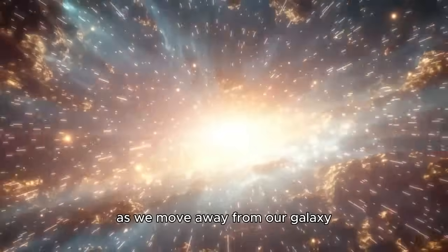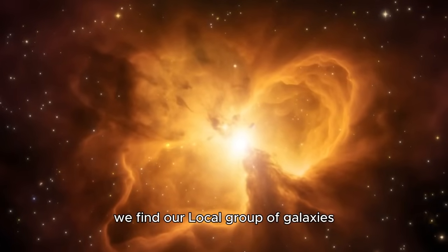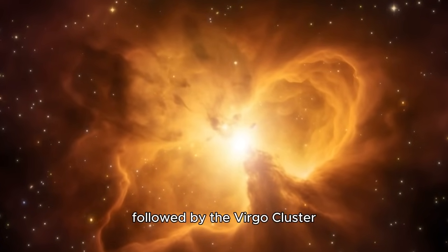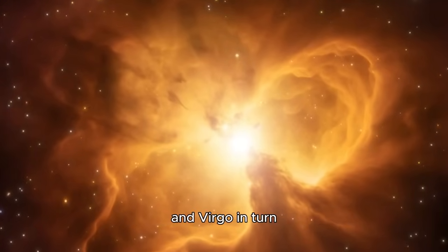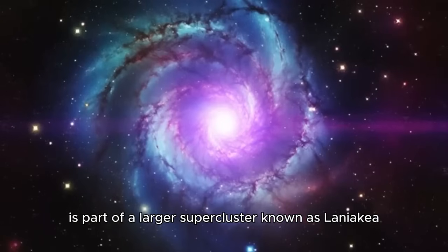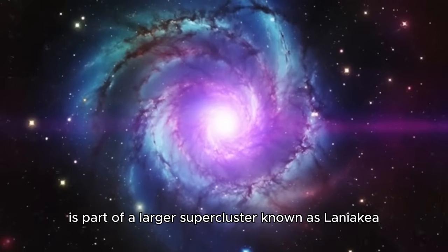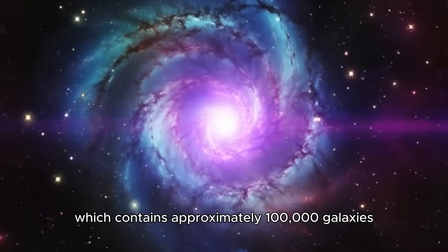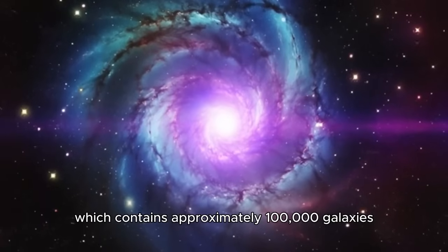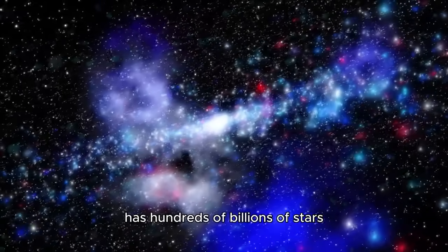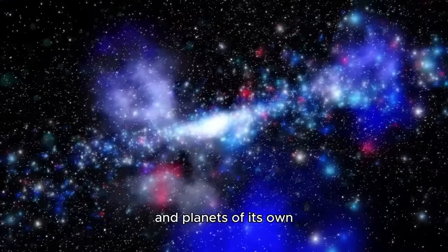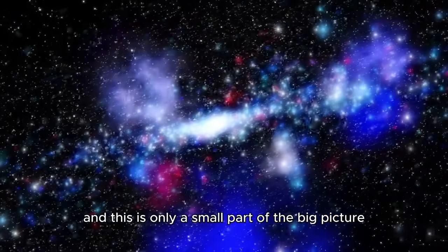As we move away from our galaxy, we find our local group of galaxies, followed by the Virgo cluster, which contains more than 1,500 galaxies. And Virgo, in turn, is part of a larger supercluster known as Laniakea, which contains approximately 100,000 galaxies. Each of these 100,000 galaxies has hundreds of billions of stars and planets of its own. And this is only a small part of the big picture.